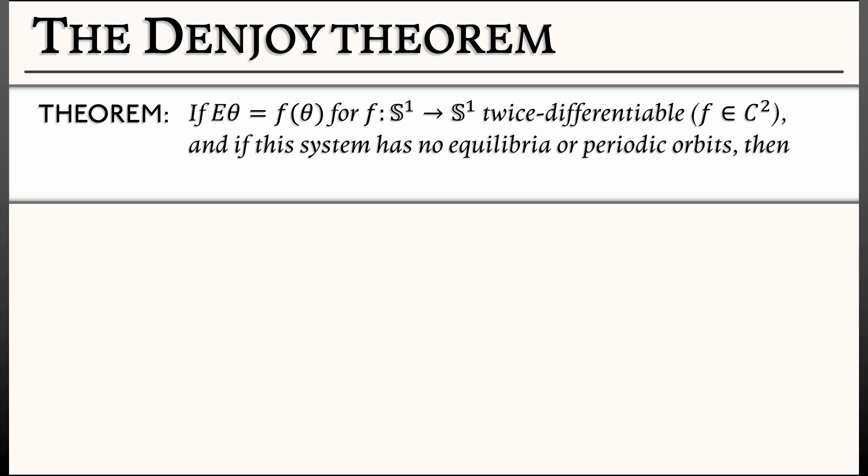Now if this system has no equilibria and no periodic orbits, then—well how could that happen? Oh wait, we've seen some examples of such systems. We've seen the rigid linear rotation of a circle, that's just Ė θ = θ + ω for ω an irrational number.